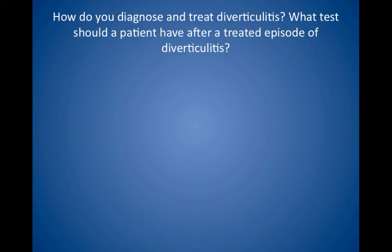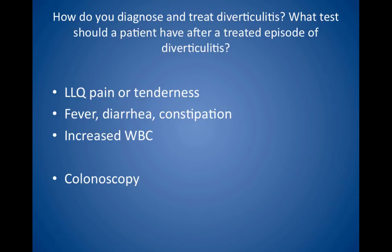How do you diagnose and treat diverticulitis? Signs and symptoms include left lower quadrant pain or tenderness, fever, diarrhea or constipation, and increased white blood cell count. The pathophysiology is thought to be similar to appendicitis. Stool or other debris impacts within the diverticulum and causes obstruction, leading to bacterial overgrowth and inflammation. The diagnosis can be confirmed with a CT scan, which can also help rule out complications such as perforation or abscess. In the absence of complications, treatment is antibiotics that cover bowel flora, for example a fluoroquinolone plus metronidazole, as well as bowel rest. Surgery is needed for perforation or abscess. After a treated episode of diverticulitis, all patients need colon cancer screening with colonoscopy, because colon carcinoma with perforation can mimic diverticulitis clinically and on CT scan.